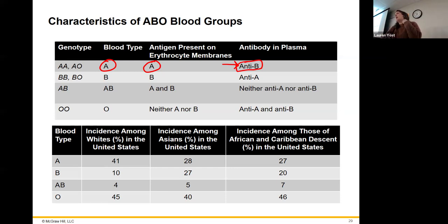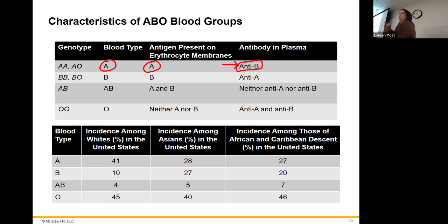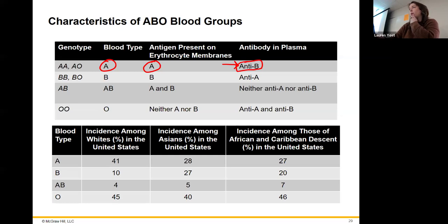My sister has AB blood type — she has A and B on her surface, so to her, B, A, and O all look normal. She can get anything, which is why she's a universal recipient. AB positive means she can get any type of blood at all. O, on the other hand, doesn't have A or B on the surface.